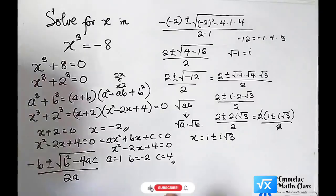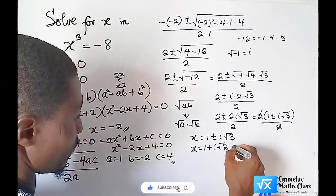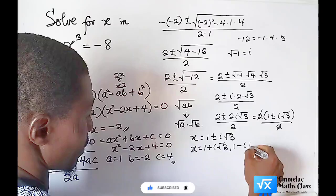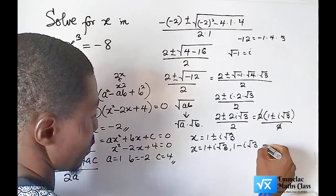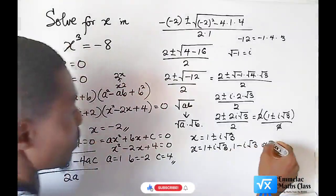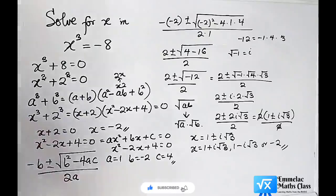Which implies that x = 1 + i√3, x = 1 - i√3, and x = -2. These are the values of x for the equation.